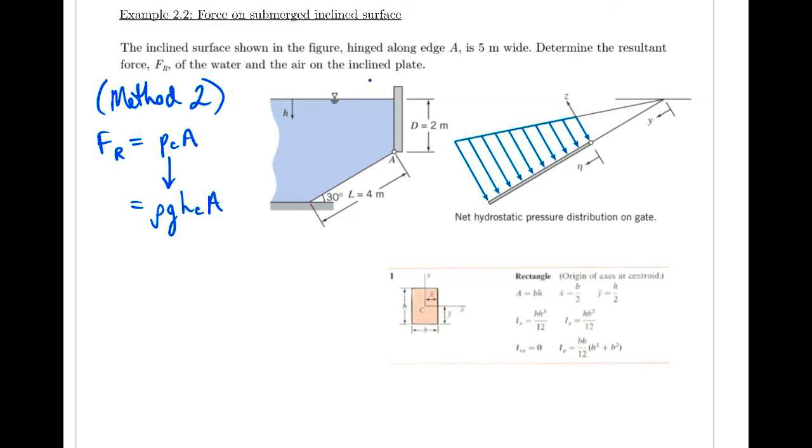So we sub in for that centroid pressure. Now h sub c is the height at the centroid location. So our first question is where is the centroid located on this rectangular surface? So we'll look at our table here to figure out where the centroid location is. So we see the rectangle that's given here. And it says the origin of axis is located at the centroid in this table. So we can take that y bar value. So c is the centroid. And then the y coordinate is this coordinate here, which is given as h over 2, so in the middle of the plate.